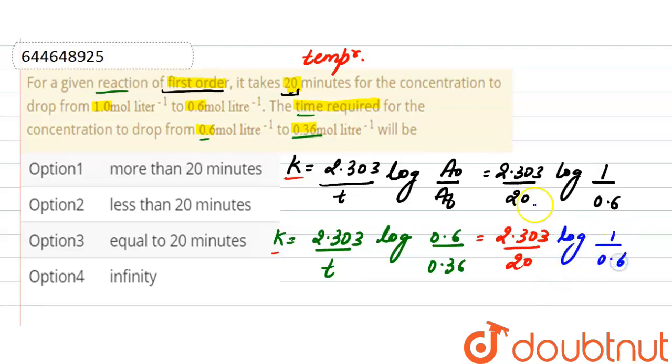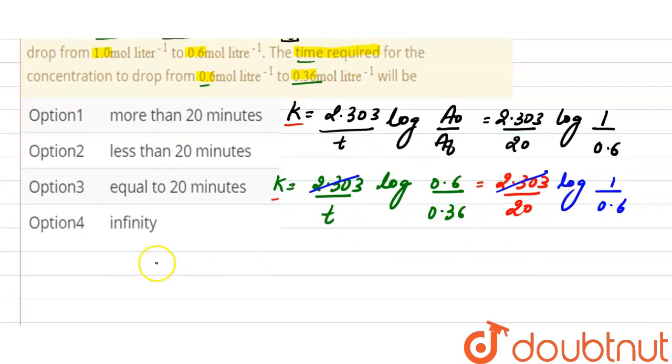So from here, this 2.303 and this will cancel out each other. And now log of 0.6 divided by 0.36, we can write it as log of 1 divided by 0.6.